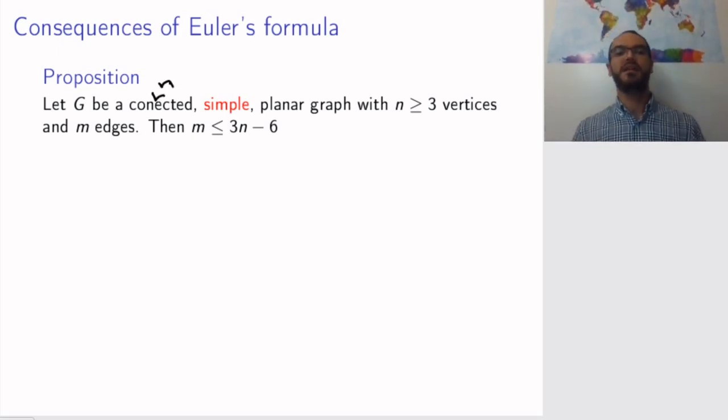The theorem says that a connected simple planar graph with at least three vertices and m edges satisfies this inequality. The number of edges is at most three times the number of vertices minus six. Simple is important because if the graph is not simple you can just draw a thousand edges between two vertices very close together. This will not ruin planarity but it will add lots of edges.